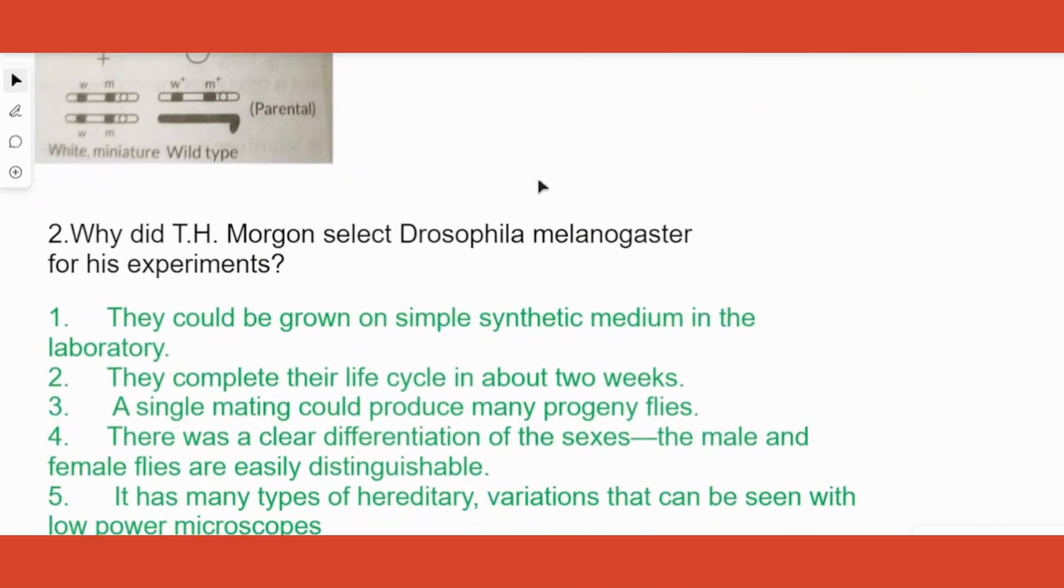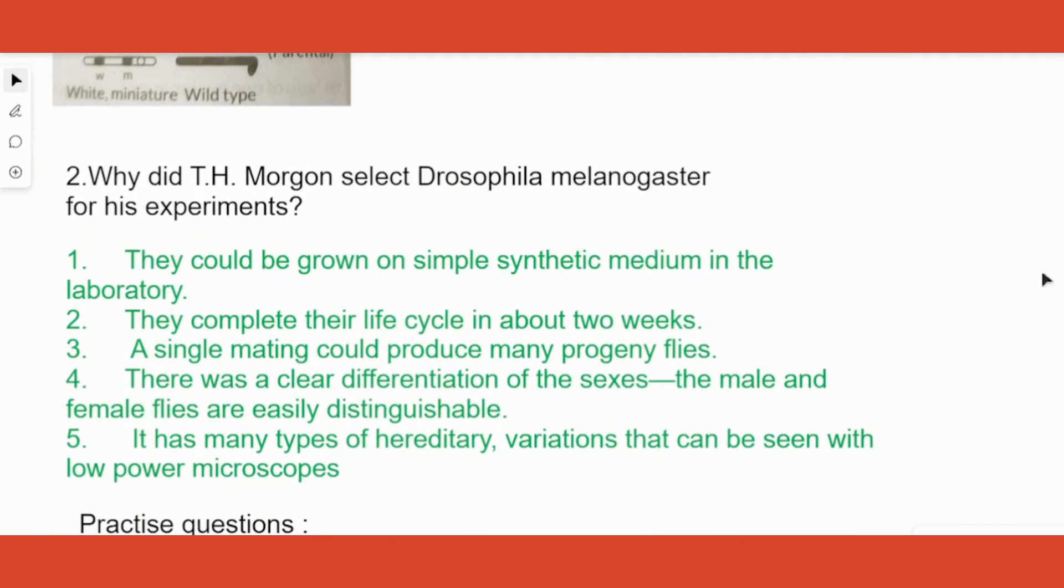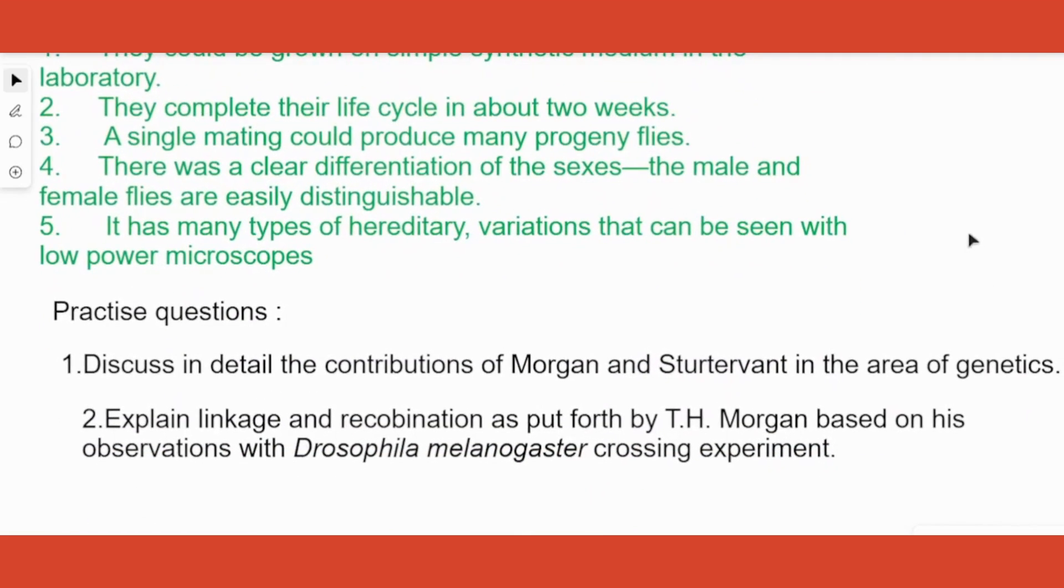Another question that usually comes is: why did Morgan select fruit fly or Drosophila for his experiments? You can just read the answer. Now practice these two questions from your textbook and let me know if you have any doubts from this part. Thank you.